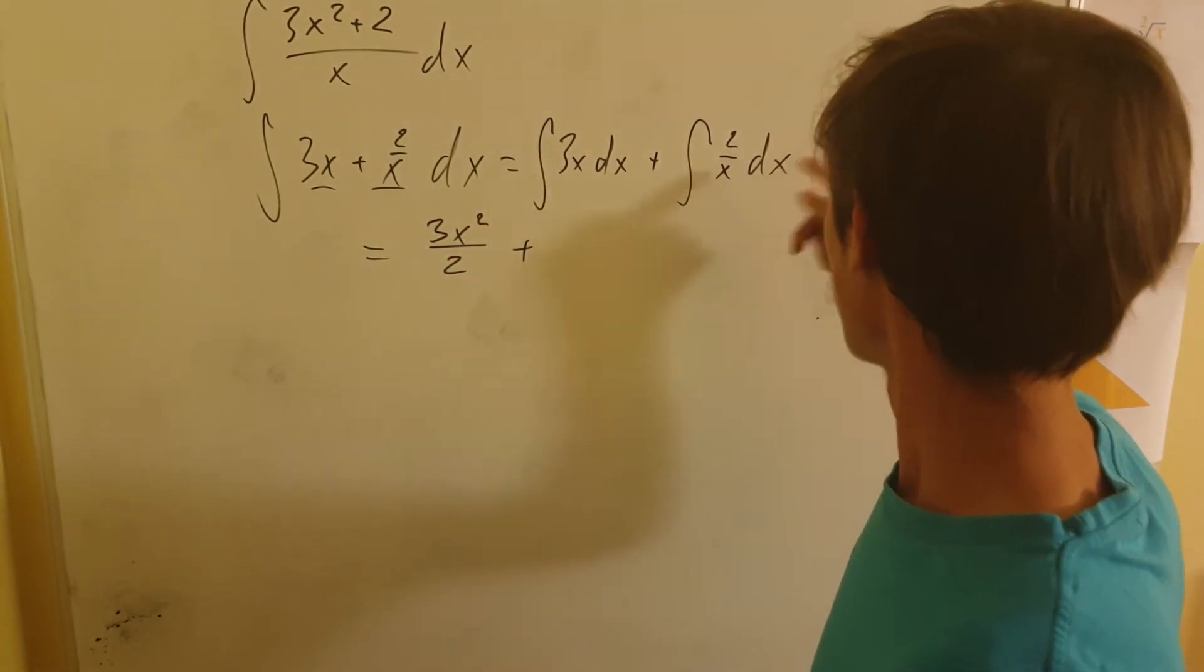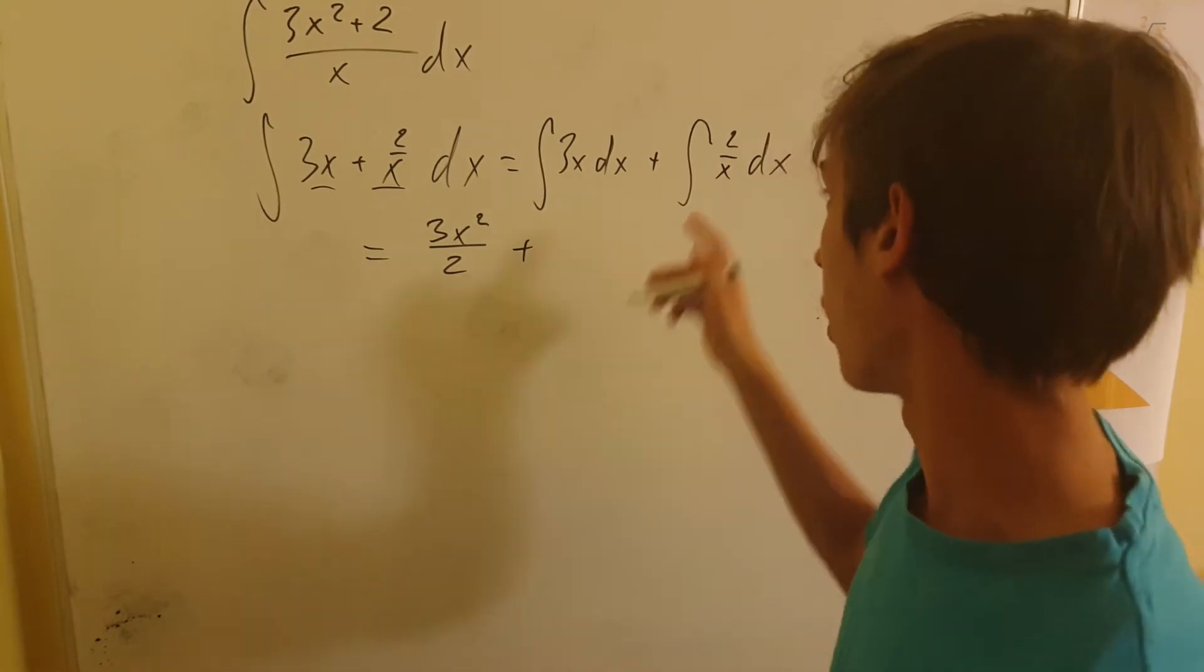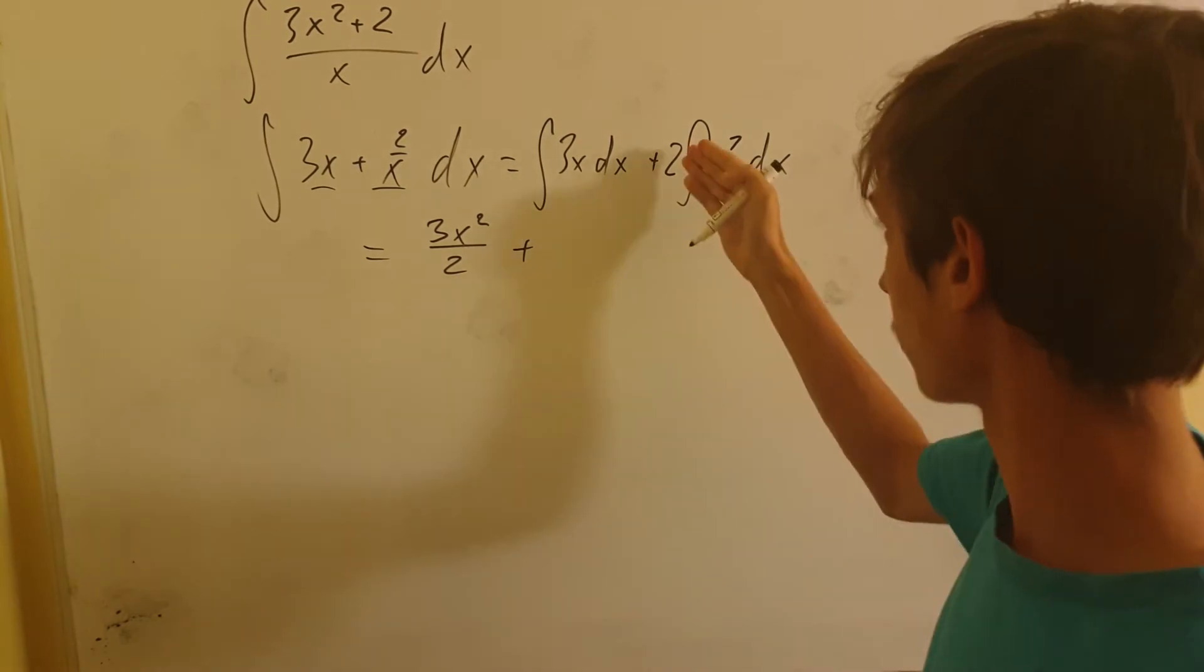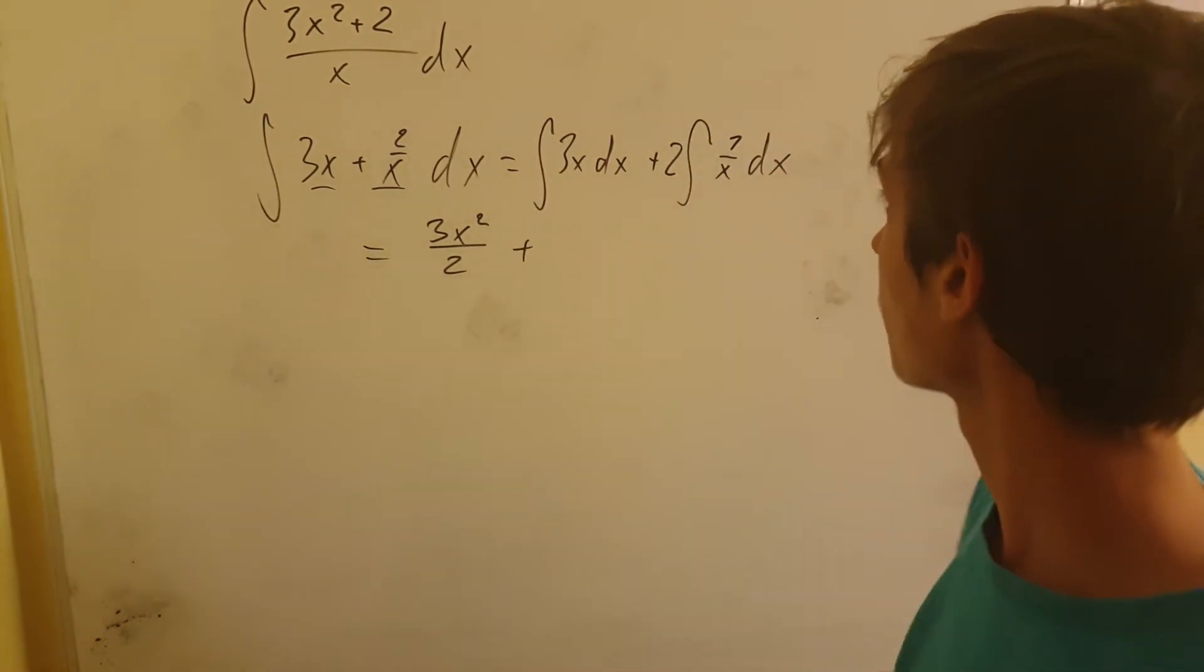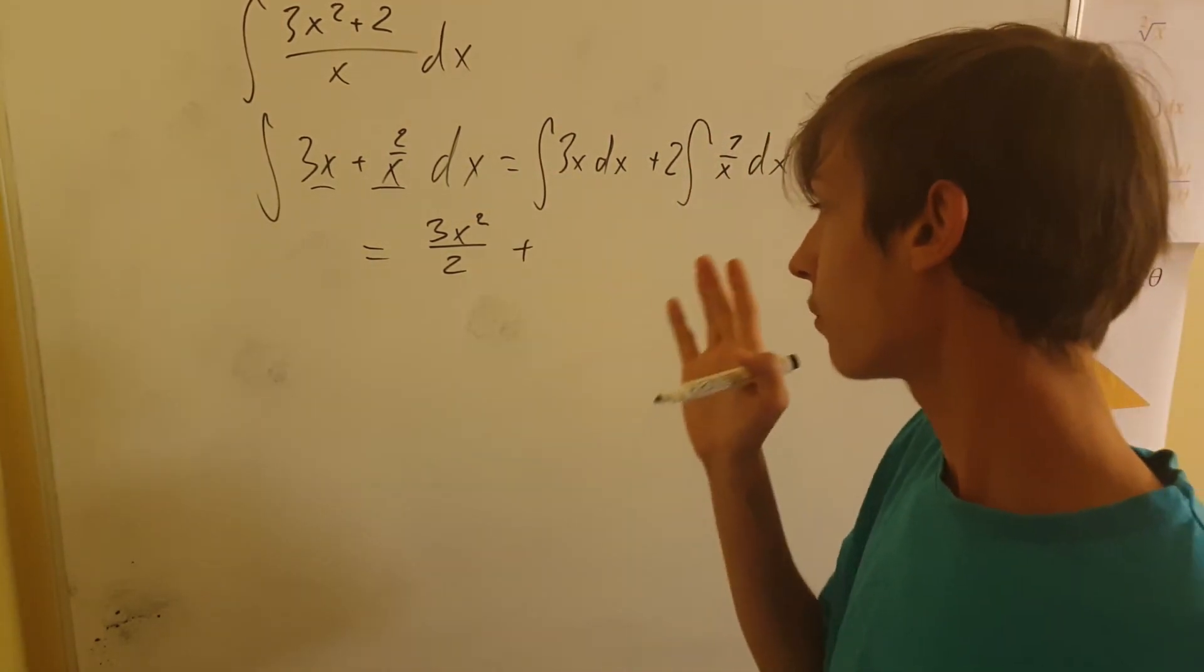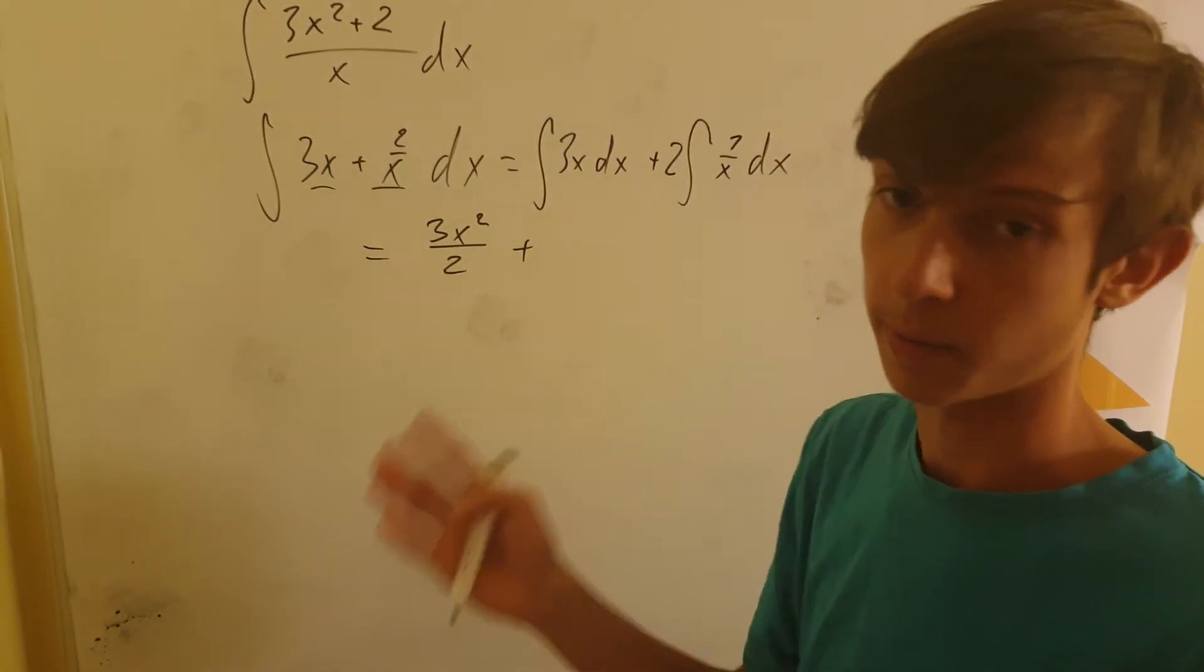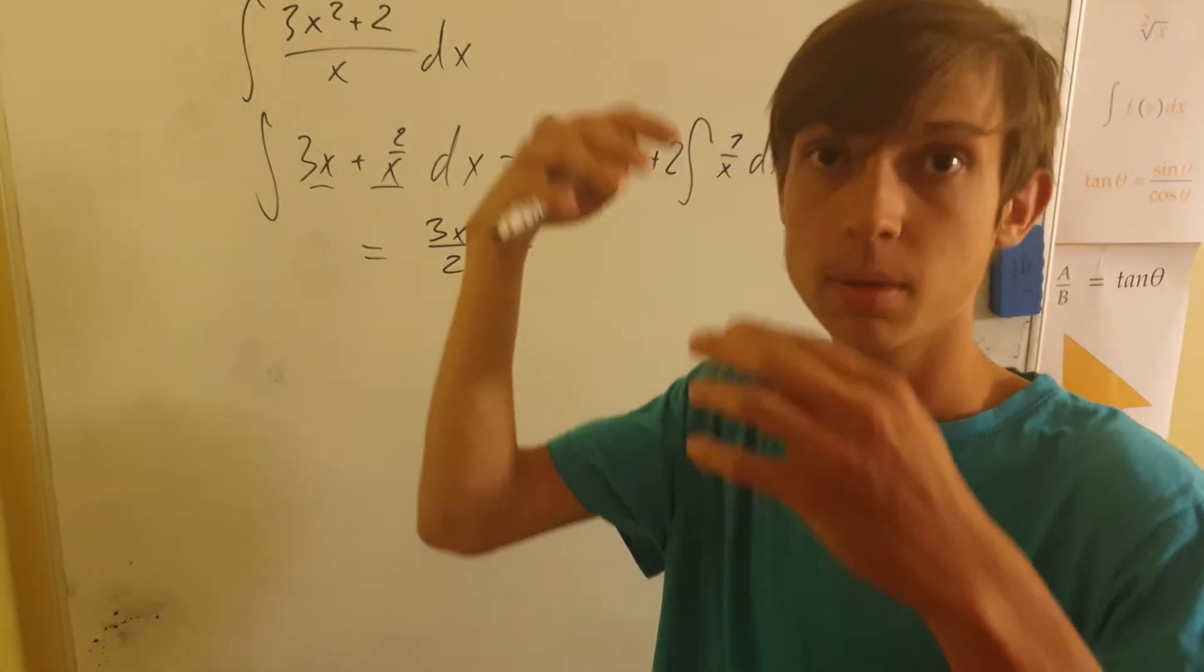But then we have 2 over x. Now, we can take the two outside. So we can put two here and put one here, because this is constant multiple. And now we have 1 over x. And we remember that the derivative of lnx is 1 over x, so the integral of 1 over x is going to be lnx.